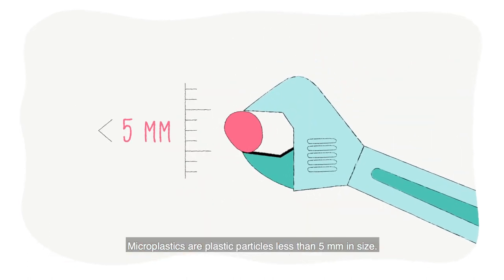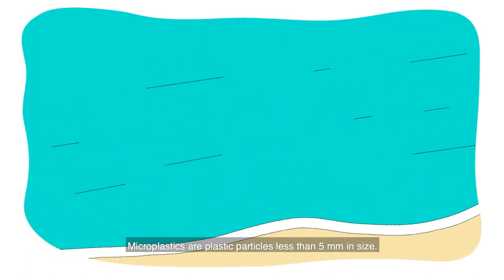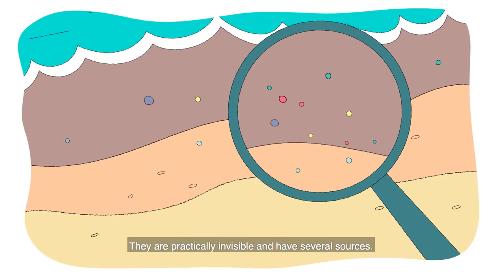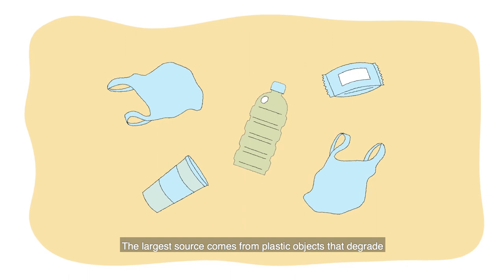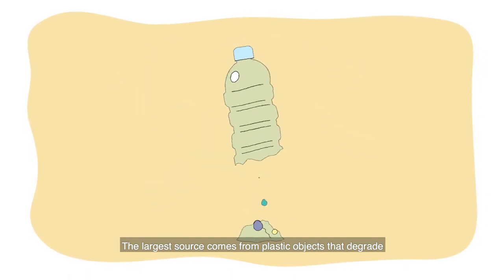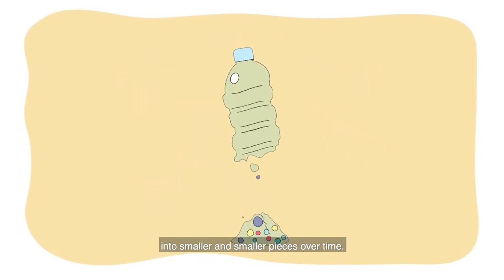Microplastics are plastic particles less than five millimeters in size. They are practically invisible and have several sources. The largest source comes from plastic objects that degrade into smaller and smaller pieces over time.